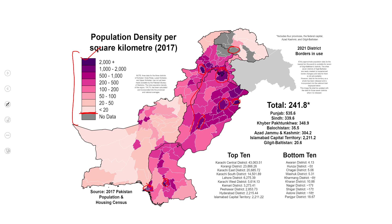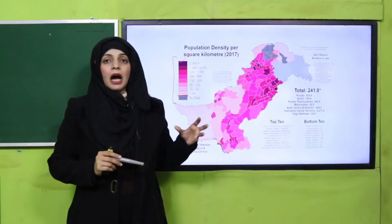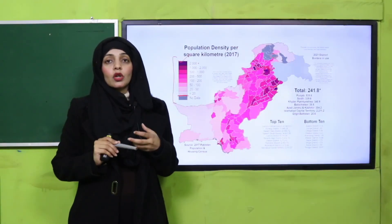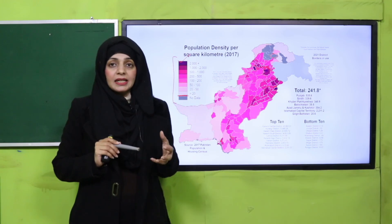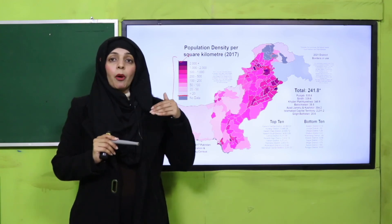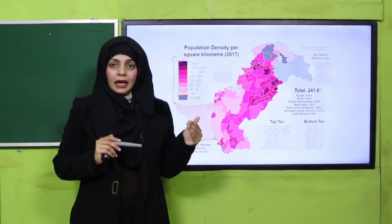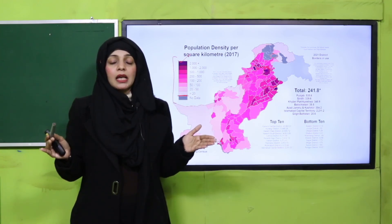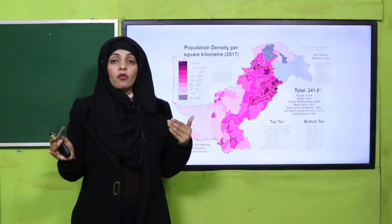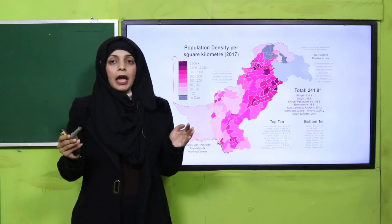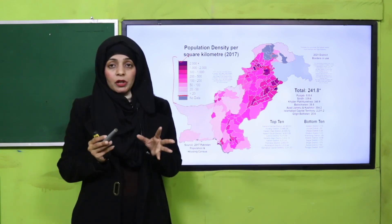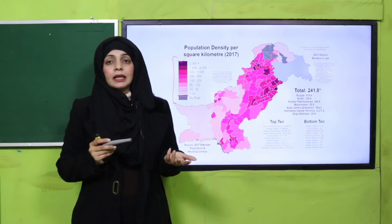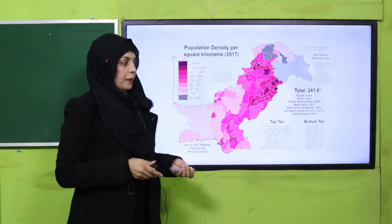Is tariqe se per square kilometer mein jo population nikalte hain, that is called population density. Agar wo population ziada hai per square kilometer ke hisaab se, that is densely populated. And if the population is less, that means it is a thinly populated area.